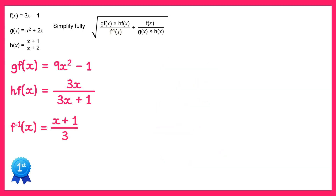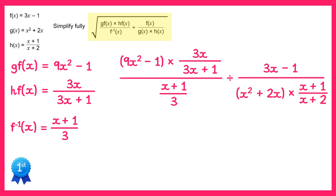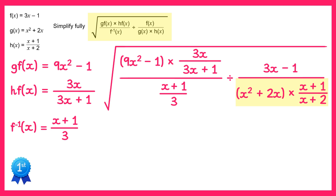Now that we've found all of these functions we're ready to tackle the whole question. We start with gf of x multiplied by hf of x, all divided by f inverse of x, and then we divide this by f of x divided by g of x times h of x — and all of this is square rooted. Let's start by looking at the denominator for the right-hand fraction. We can factorise the bracket to give x times bracket x plus 2. The x plus 2 will then cancel with the x plus 2 on the bottom of this fraction, leaving us with x and x plus 1.